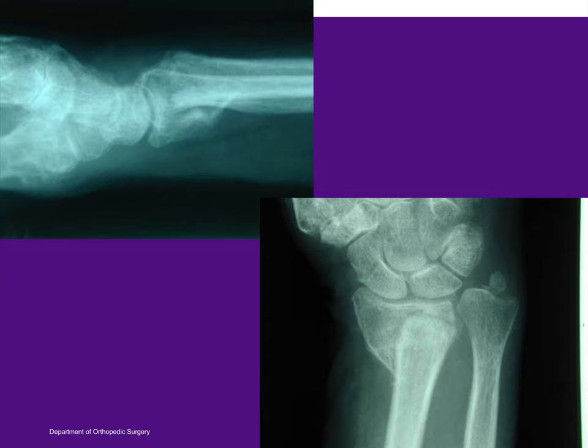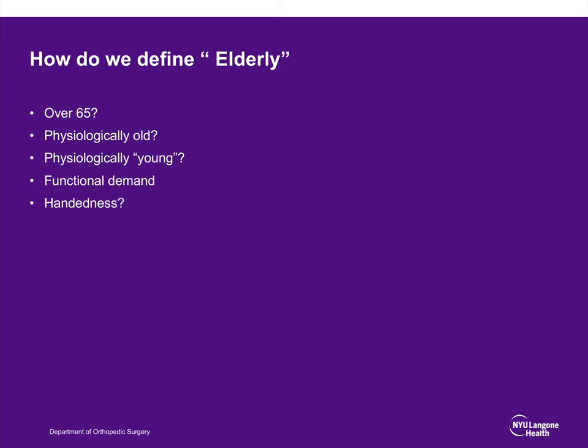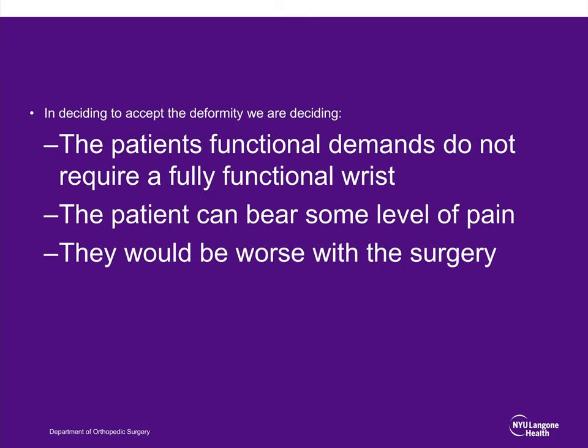One study indicates there is no benefit to a closed reduction in low-demand elderly patients. The problem is always defining 'elderly'—is it over 65, physiologic age, functional demand, or handedness? No one can agree. Treating nonoperatively means accepting that the patient's functional demands do not require a fully functional wrist, that they can tolerate some pain, and that they would be worse off with surgery.